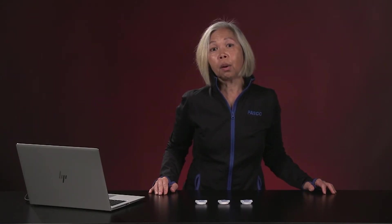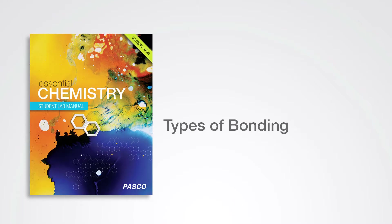How can we differentiate the types of bonds in chemical compounds? This is the types of bonding lab.